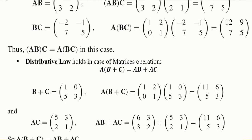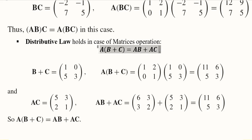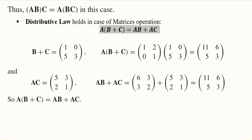Finally, we verify the distributive law, which involves both addition and multiplication. We calculate b + c first, then multiply by a to get the left-hand side. On the right-hand side, we separately calculate a·b and a·c. a·b was already found, so we borrow that result. We calculate a·c by multiplying a and c while keeping a before c. Adding a·b and a·c gives us the right-hand side, which equals the left-hand side, confirming the distributive law holds.